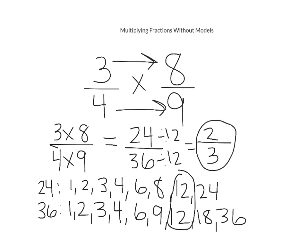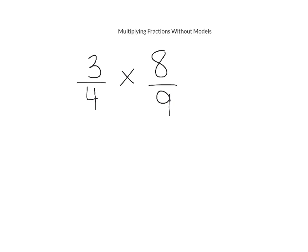Another strategy you can use when multiplying fractions without models is to do the opposite — instead of multiplying straight across first and then simplifying, we're going to simplify first and then multiply across.